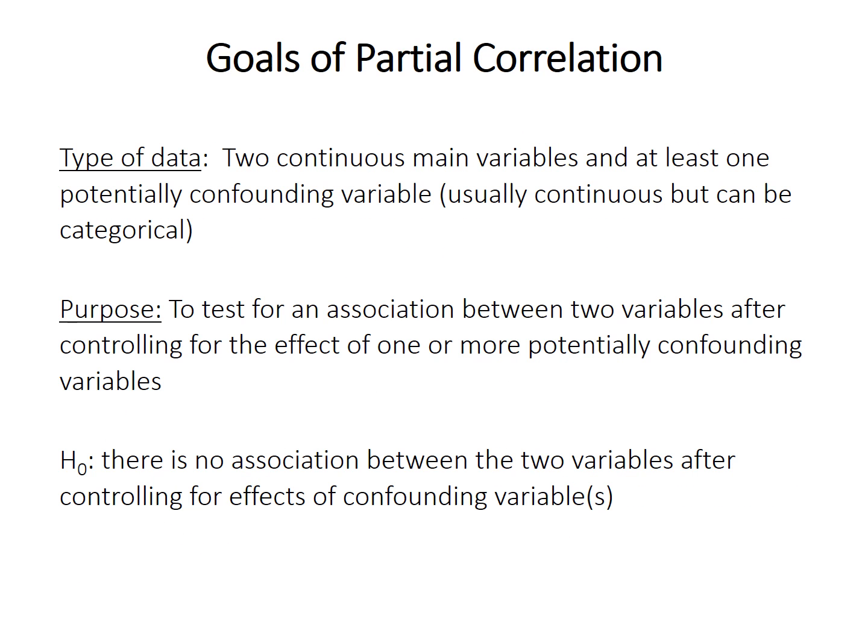To perform partial correlation, you need two continuous main variables — the ones you're interested in — and at least one potentially confounding variable. The confounding variable is usually also continuous, but there are examples where it's categorical, although those seem to be less common. The purpose of partial correlation is to test for an association between the two main variables after accounting for or controlling for the effects of a confounding variable. You can have more than one confounding variable, although it gets complicated. The null hypothesis is that there's no relationship or association between the two main variables after controlling for the confounding variable.